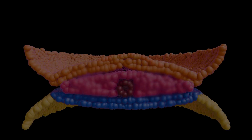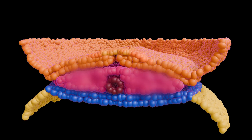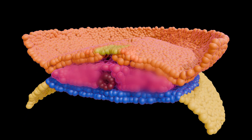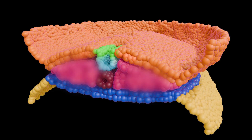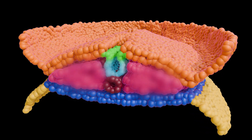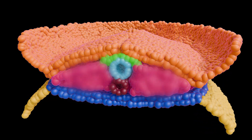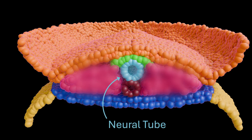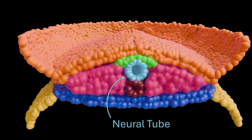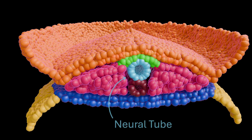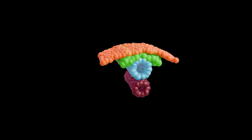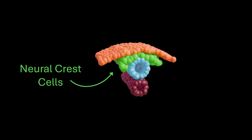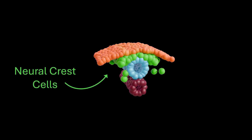Around day 18, the neural plate begins folding inward. It forms a neural groove bordered by raised folds, and over the next few days, these folds rise, converge, and fuse into the neural tube. At the same time, special cells at the crest of each fold break free and migrate — and these are the neural crest cells.